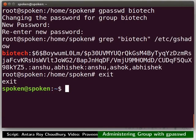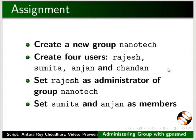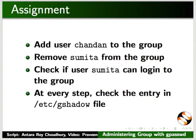This brings us to the end of this tutorial. Let us summarize. In this tutorial, we learned to set group administrator, set group member, add and delete user, remove password of a group, and restrict access of a group. As an assignment, create a new group Nanotech. Create four users: Rajesh, Sumita, Anjan and Chandan. Set Rajesh as the administrator of the group Nanotech. Set Sumita and Anjan as members. Add user Chandan to the group. Remove Sumita from the group. Check if user Sumita can login to the group. At every step, check the entry in the slash etc slash gshadow file.